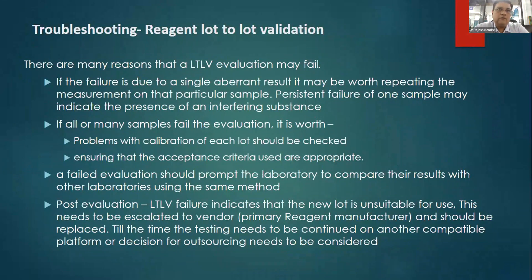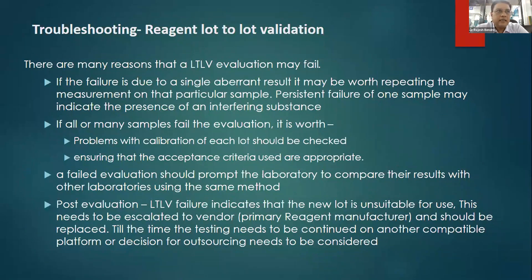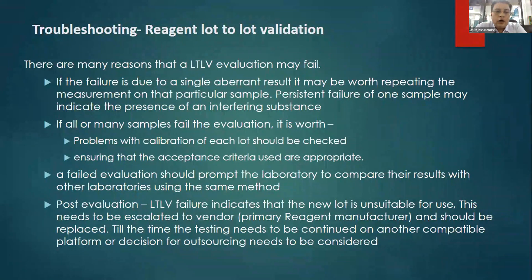Finally, once you have done a reagent lot-to-lot validation, how do you troubleshoot a failure? First, look at whether there is a trend or a single isolated outlier sample. If it is a single isolated outlier, repeat it — and if it is still an outlier on repeat, the issue is likely with that sample itself, so choose another sample. If there is a trend with a large number of samples going out, look at two important points: whether calibration has been done correctly with the new lot, and whether the acceptance criteria has been applied appropriately.